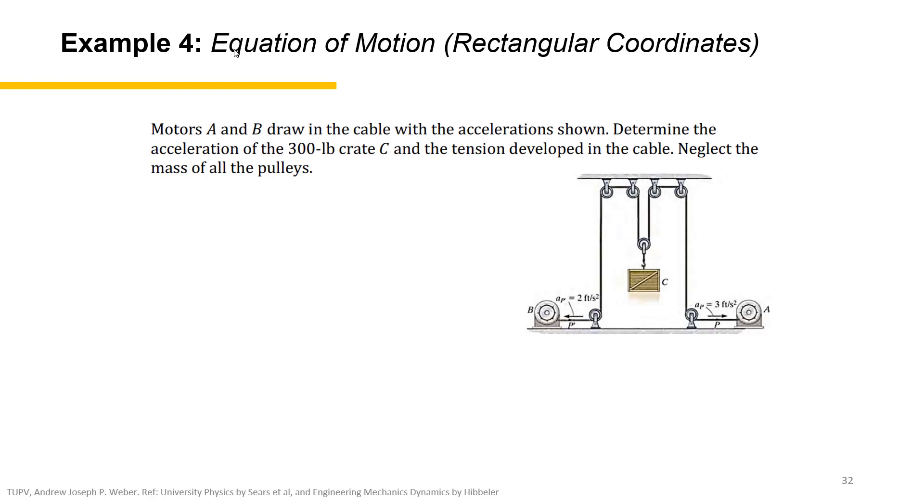First is, of course, the given. The mass of the crate C is 300 pounds and the acceleration for motor B, AB is 2 feet per second squared. That's it for the given, except for the FBD diagram.